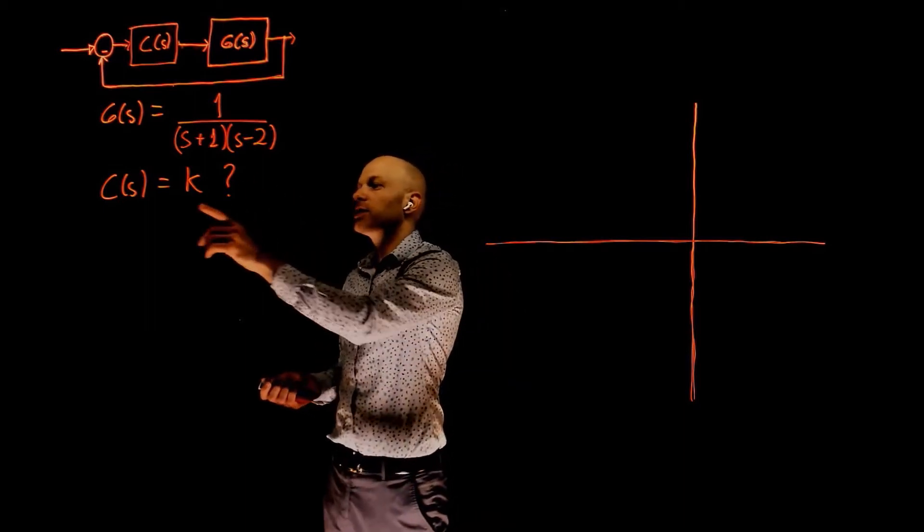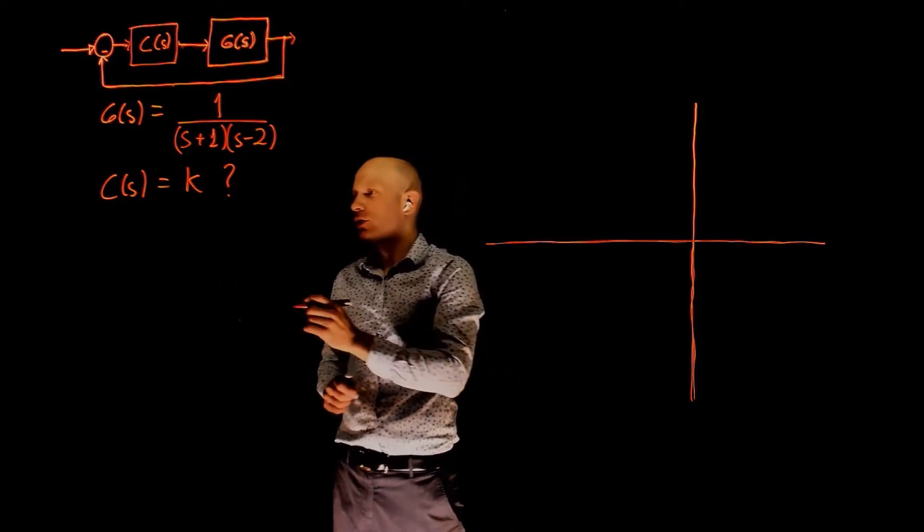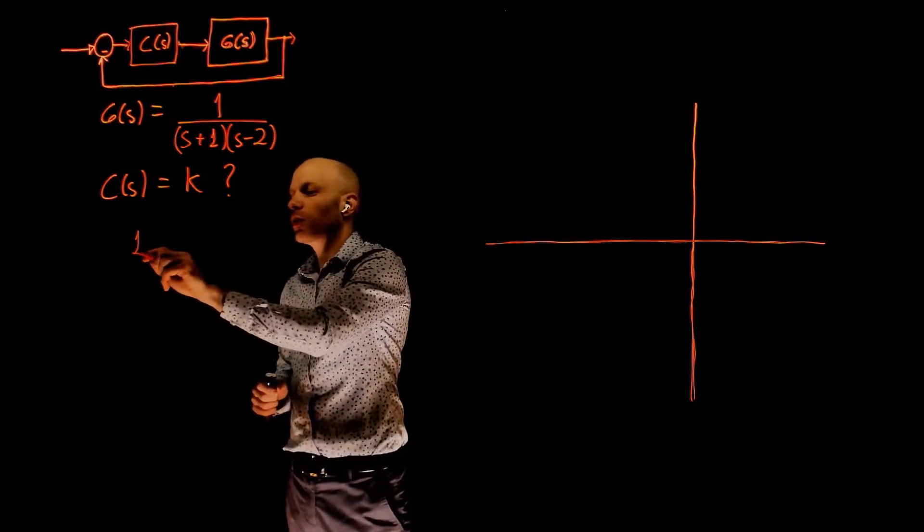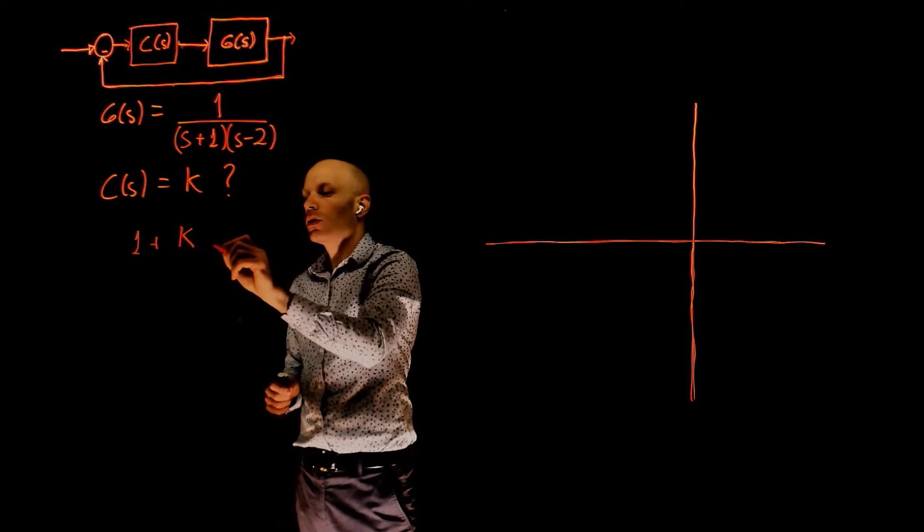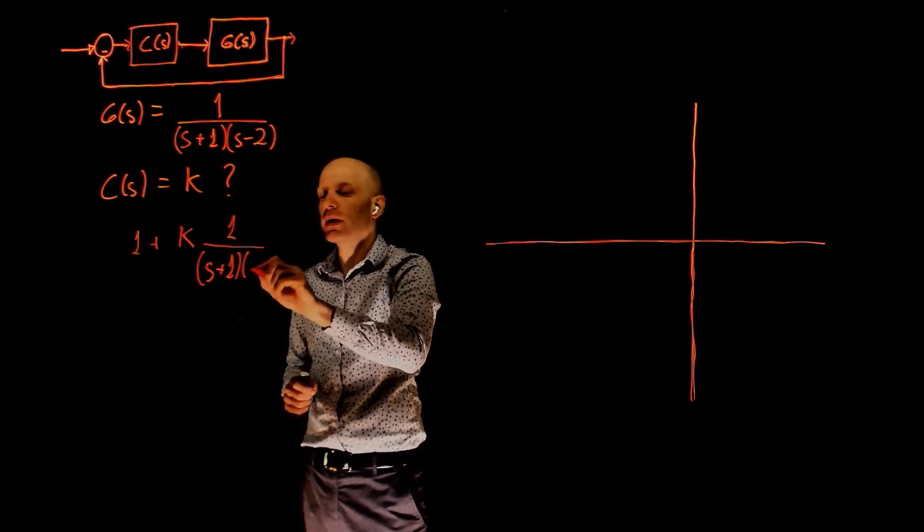Let's just start by analyzing C of S equals to K. Now, in this case, our closed-loop transfer function has a characteristic equation as 1 plus K times 1 over S plus 1 times S minus 2.